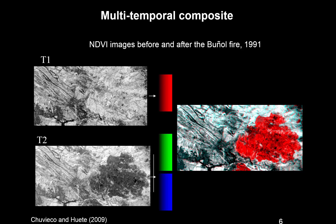This is an example of multi-temporal composites. Here you have an NDVI image before a fire that happened in Spain in 1991, and here one image after the fire. If we assign to the red channel the image before the fire and to the green and blue channels the image after, the result is this image where the fire scar is in red.